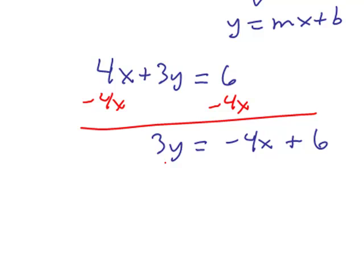Then we need to divide each and every term by 3, and this will get us y all by itself. Y equals, in this case, negative 4 thirds x plus 2.